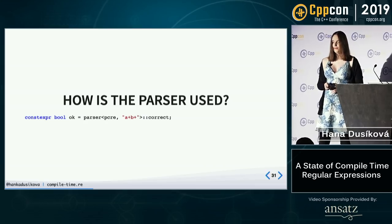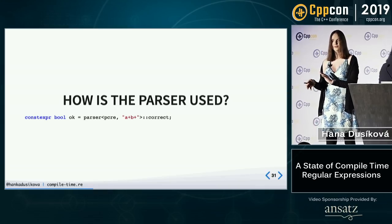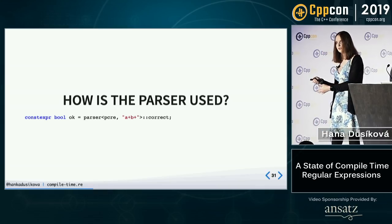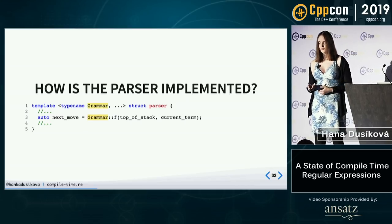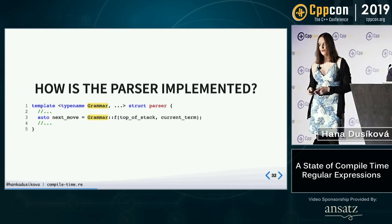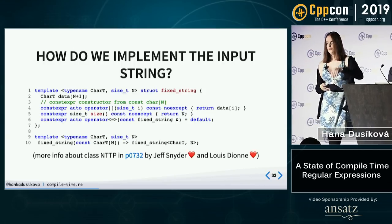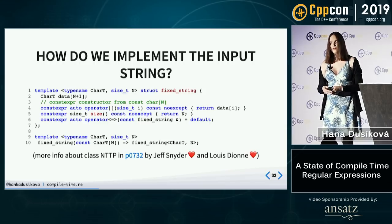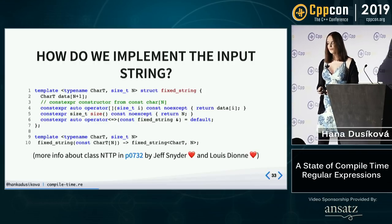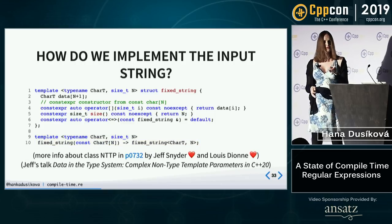The parser is used like this: first argument is grammar, second argument is string. After parsing, there's a variable 'correct' which says if the parser is accepting or rejecting the input. The parser looks into the grammar for function f which is the table, and based on that decides what the next move is. This is implemented with Jeff's paper and the CNTTP feature of C++20 — more about it in his talk later.